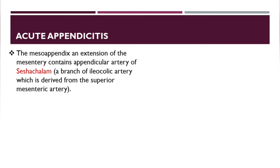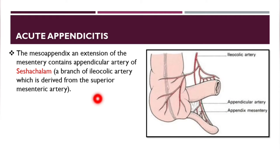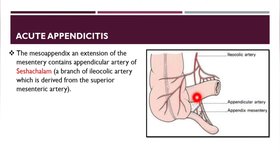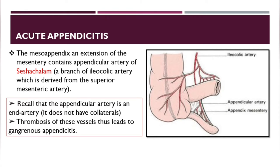The appendix has a mesentery called the mesoappendix, which is an extension of the mesentery containing the appendicular artery — a branch of the ileocecal artery, derived from the superior mesenteric artery. Importantly, the appendicular artery is an end artery with no collaterals, so any thrombosis in this region leads to gangrene — gangrenous appendicitis.